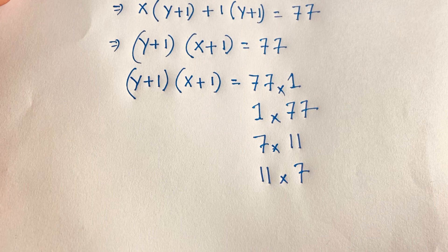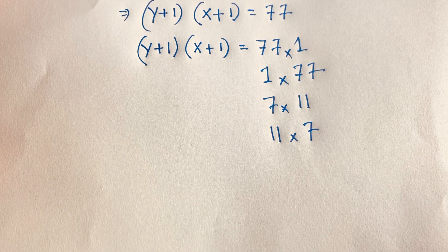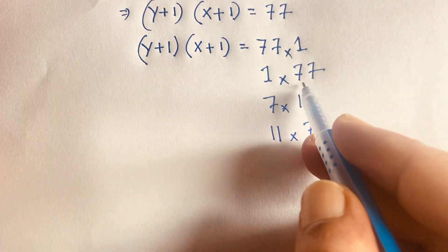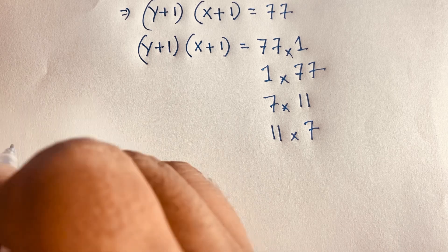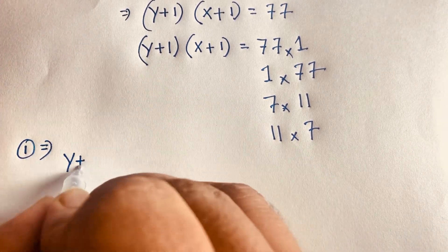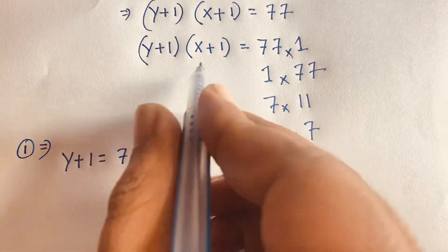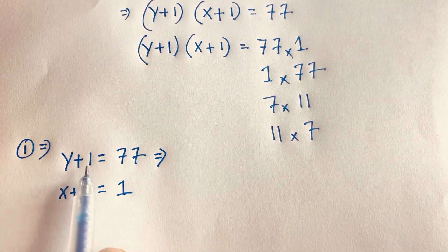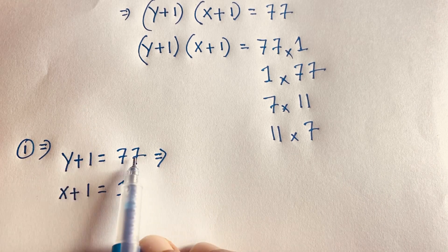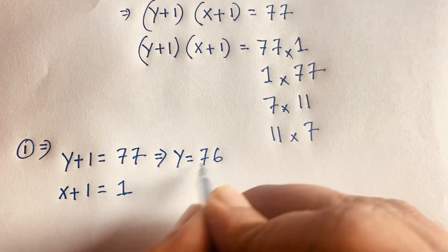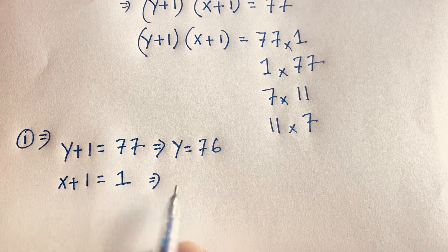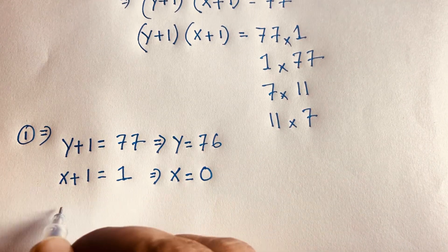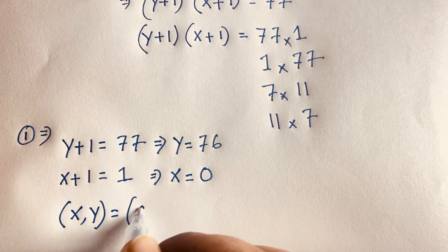In Case 1: y plus 1 equals 77 and x plus 1 equals 1. So y equals 76, and x equals 1 minus 1 equals 0. So in this case our answer is x = 0, y = 76.